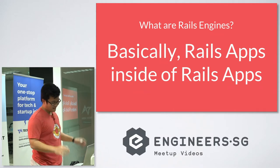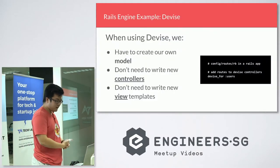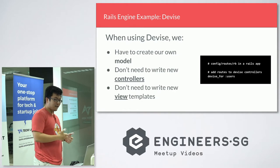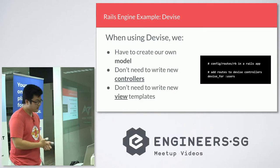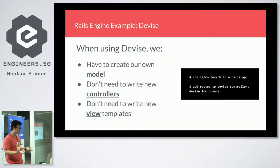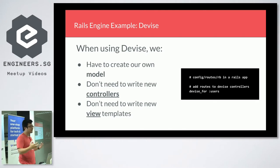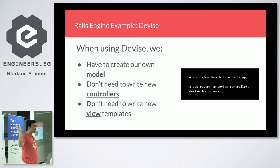On a very high level basic idea — to go a bit deeper as an example — Devise is actually something you can understand as a Rails engine. When you use Devise, you have to create a model, the user-authenticated model. But you don't need to write the controllers, you don't need to write the views, it works. You can override the controllers and views, but you don't have to create your own. All you have to do is put this thing in your routes file and it's supposed to work.